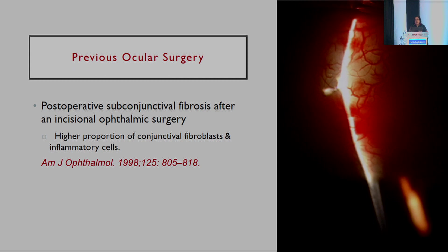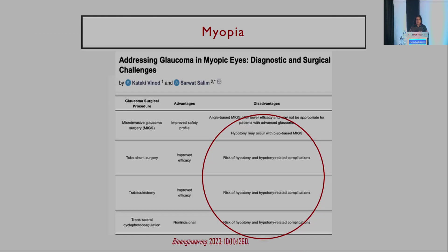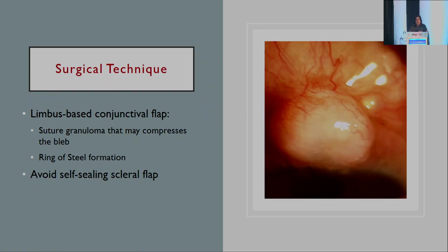Prior ocular surgeries add more trauma to the ocular surface. Post-operative subconjunctival fibrosis after incisional ophthalmic surgery is much greater because of recruitment of conjunctival fibroblasts and inflammatory cells that will become active the moment we perform a trabeculectomy. Myopia has been cited as a risk factor for hypotony maculopathy post glaucoma filtration surgery — not just trabeculectomy, but also tube shunt surgery and MIGS. In high myopes, a thorough workup and plan to prevent post-operative hypotony is essential; a tight closure is really warranted.